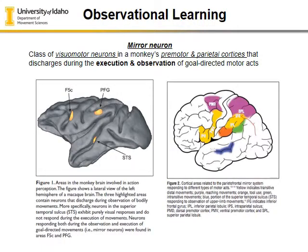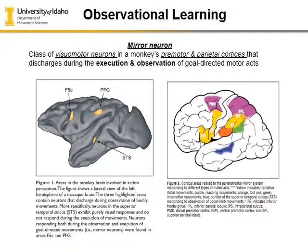Observational learning is really important and it has been shown to occur in monkeys through something called a mirror neuron. A mirror neuron is a class of visuomotor neurons located within the premotor and parietal cortices. They are motor neurons in the brain that fire during the execution of tasks. What has been shown in monkeys is that these neurons also fire in a very similar manner when the monkey observes somebody else performing goal-directed motor acts — firing both during execution and observation.